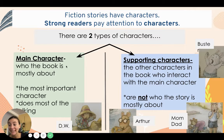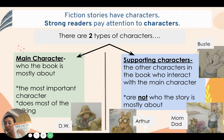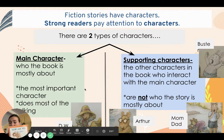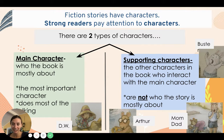There are main characters — that's who the book is mostly about. That's the most important character, and that character usually does most of the talking. For example, in the story D.W. All Wet that we read last week, the main character was D.W. D.W. is in the title. She is the most important character — D.W. is the main character.